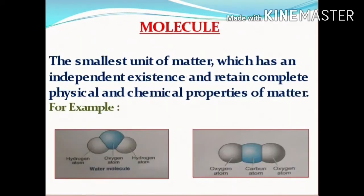If matter is made of two or more different elements, then the smallest unit of matter is called a molecule. The smallest unit of a substance which is capable of independent existence and shows all the properties of that substance is called a molecule — that is, the smallest unit of matter which has an independent existence and retains the complete physical and chemical properties of that matter.